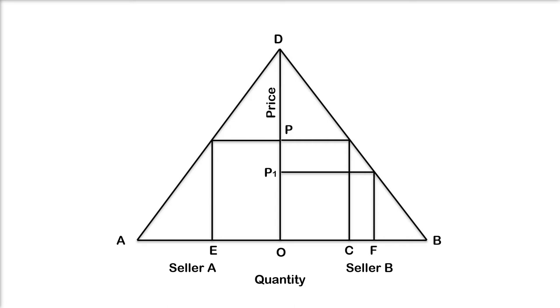Seller A finding that his sales are being reduced, reduces his price to OP2 lower than the price of B that is OP1. He now sells OG output by attracting some of B's customers.